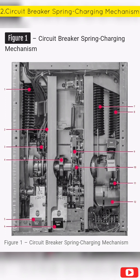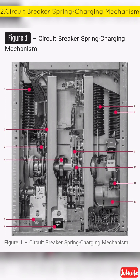Figure 1 shows the manual close button, the manual trip button, the flag indicating breaker open or closed, the flag indicating charging spring charged or discharged, and other elements of a circuit breaker.